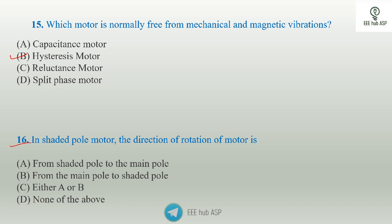The direction of rotation of the shaded pole motor: the direction of rotation cannot be easily reversed. In the shaded pole motor, the main pole and the shaded pole determine the direction of rotation. Option B is the answer.